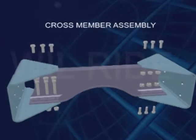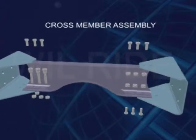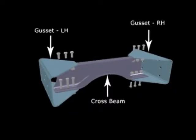Cross member assembly. Cross member assembly may consist of Gusset LH, Gusset RH, cross member beam along with assembly fasteners.